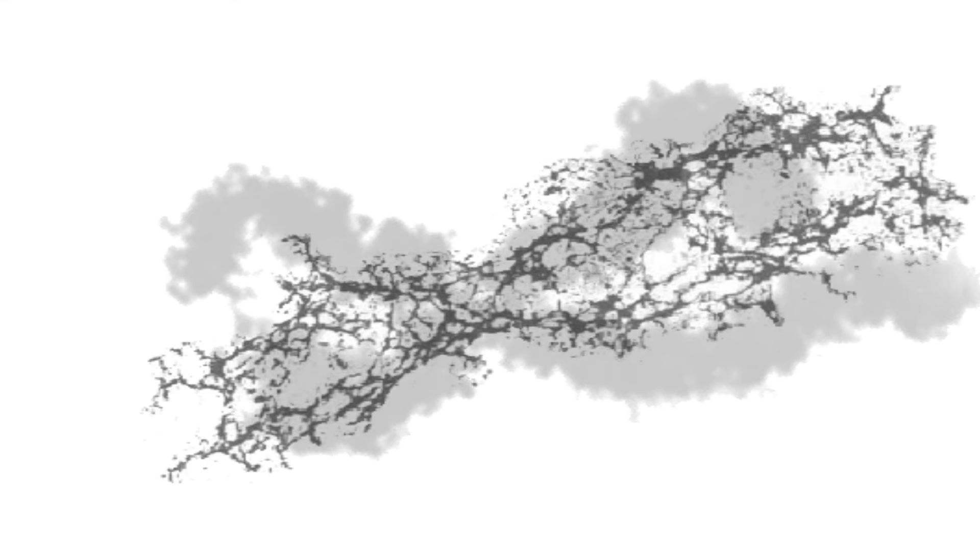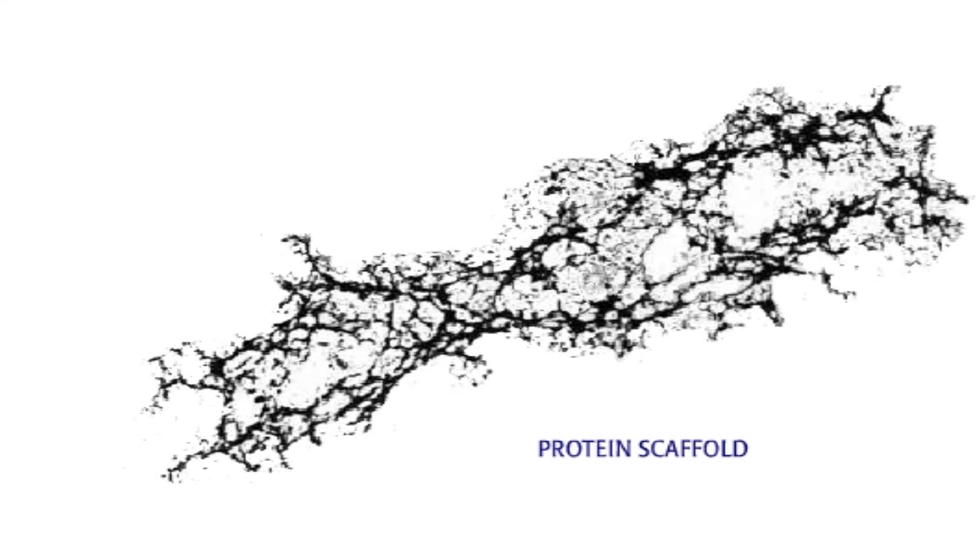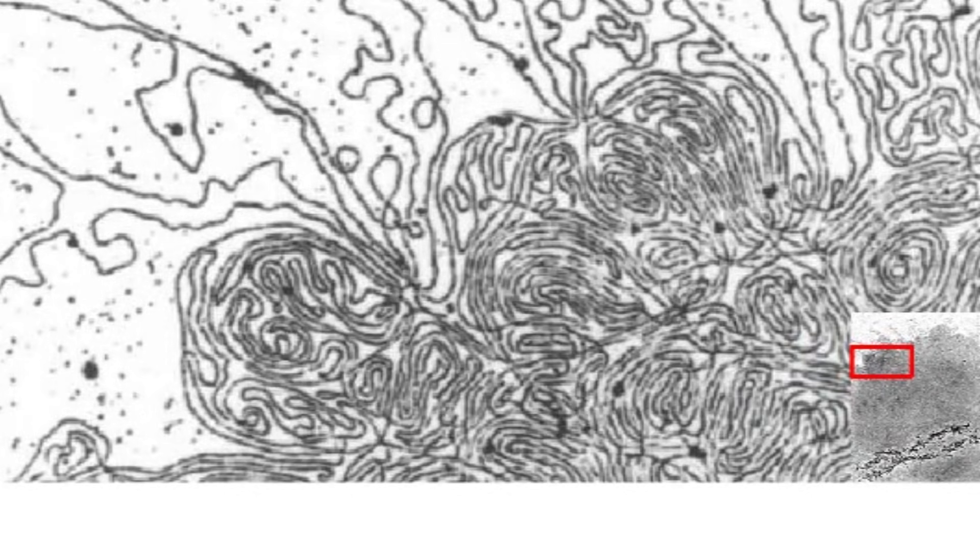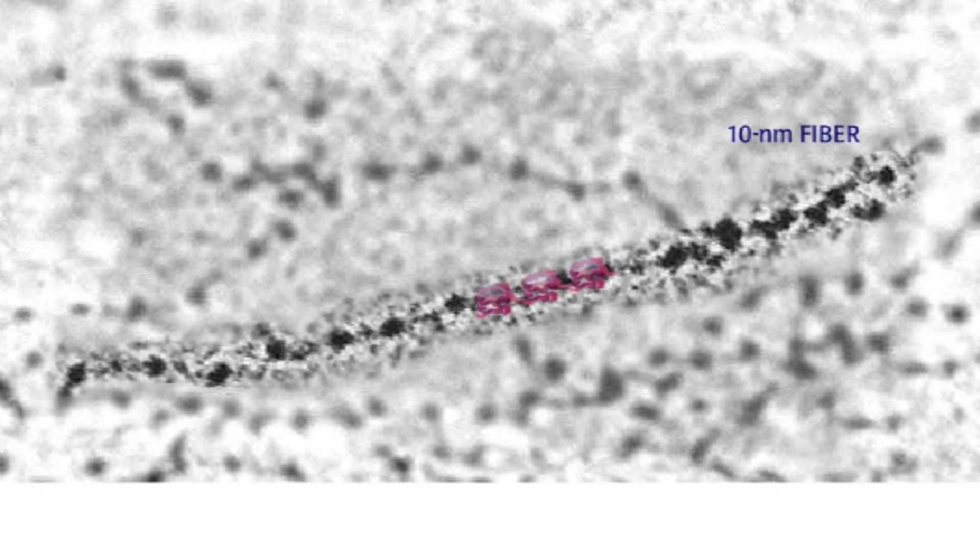Non-histone scaffold proteins maintain the shape of chromosomes even in the absence of histones. Up to six feet of DNA is packaged to fit into the nucleus of a cell. The DNA is wrapped around histone cores to form nucleosomes and the 10-nanometer fiber.